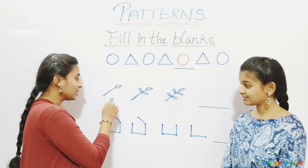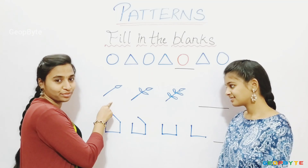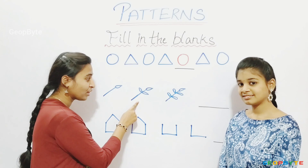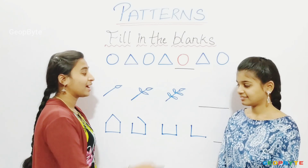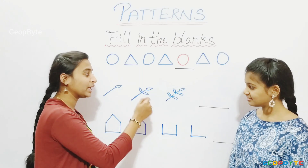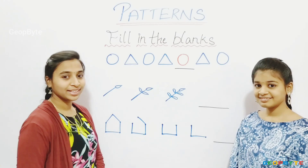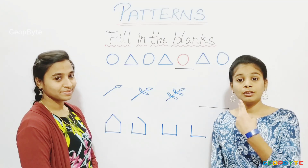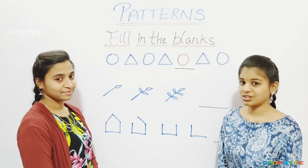Now, see here — we have a leaf. In this leaf, two more leaves are added. And in this leaf, two more leaves are added. What comes in the blank? Yes, two more leaves will be added. Let us draw.